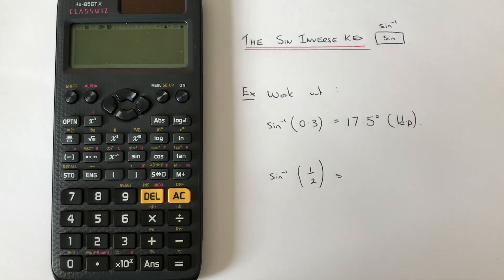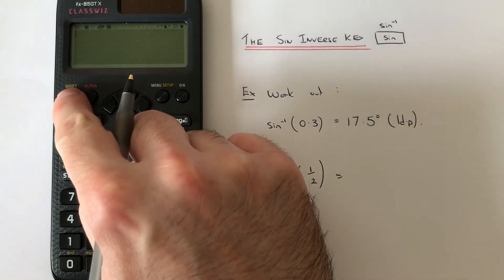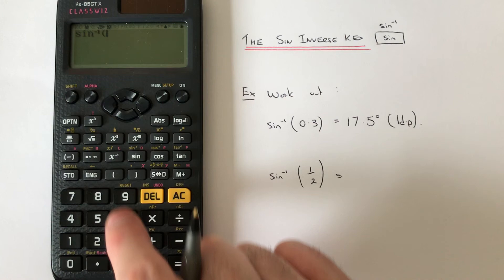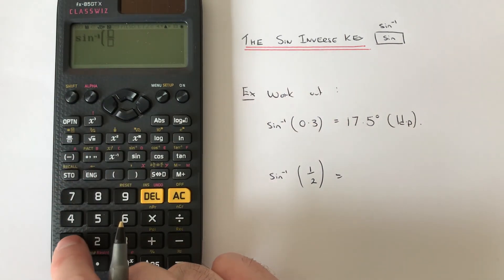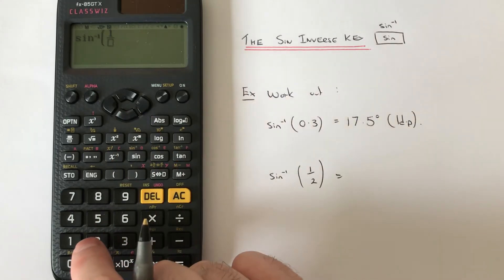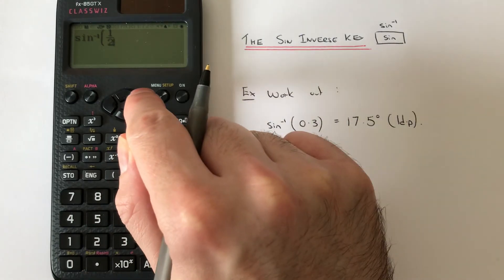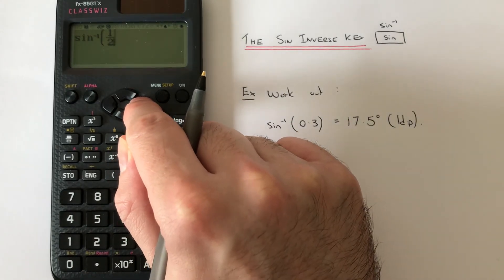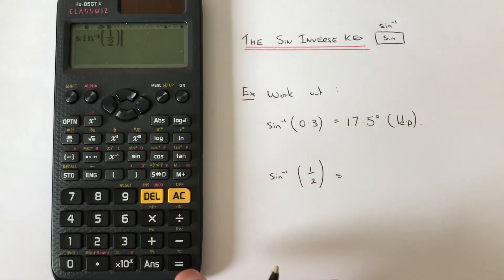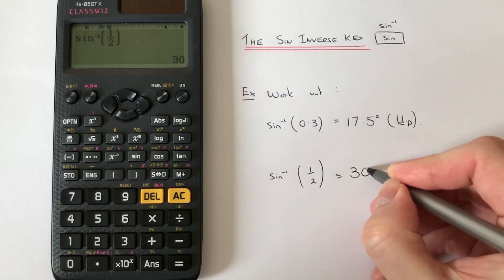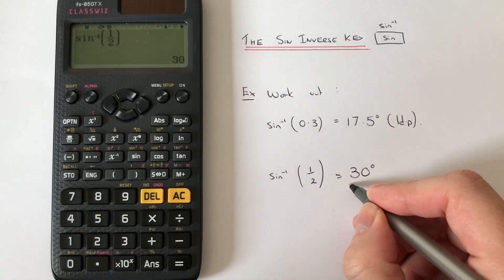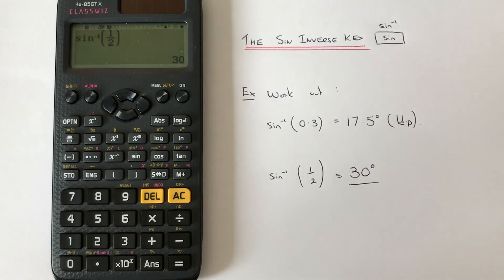This time we've got sin inverse of a half, so we press shift sin and then the fraction key one over two. We need to close the bracket, press the right key and the right bracket, then press equals and it converts it into an angle again of 30 degrees. Thanks for watching guys, see you next time.